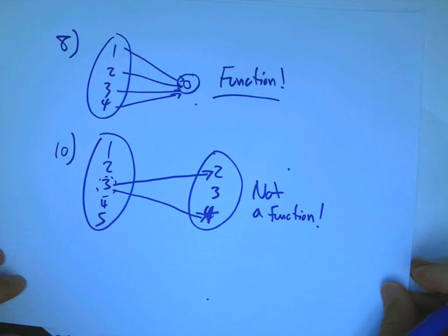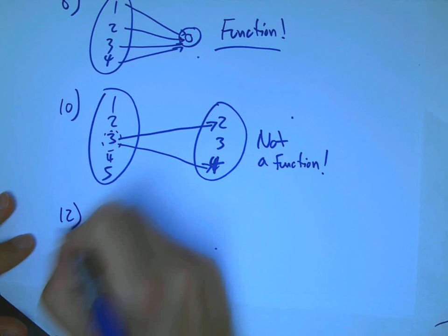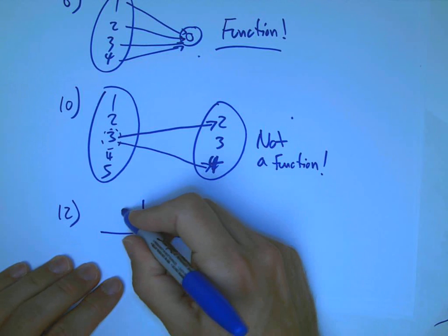And, the thing here is that there's other inputs like 1, 2, 4, and 5 actually only have one output if you look at the graph and the picture in the book. But, it's just one bad apple will spoil the bunch by the rules. It's not a function.